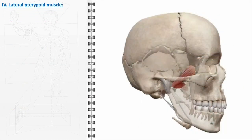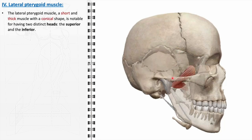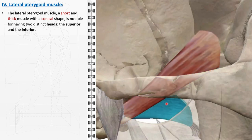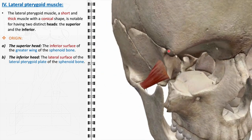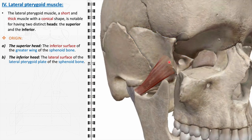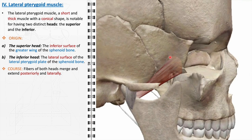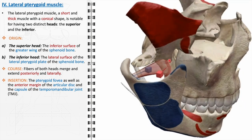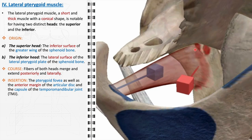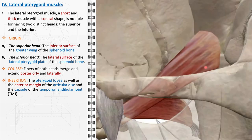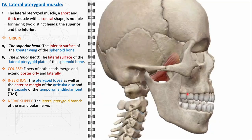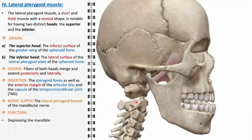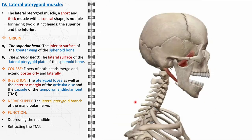The lateral pterygoid muscle, characterized by its conical shape and two-headed structure, is integral to the complex mechanics of jaw movement. The superior head originates from the greater wing of the sphenoid bone, and the inferior head arises from the lateral pterygoid plate, converging to form a muscle with a unique action. The muscle fibers insert into the pterygoid fovea, and the lateral pterygoid also attaches to the anterior margin of the articular disc and capsule of the temporomandibular joint. It receives its nerve supply from the lateral pterygoid branch of the mandibular nerve, a branch of the trigeminal nerve. Functionally, it is essential for depressing the mandible and protracting the temporomandibular joint.